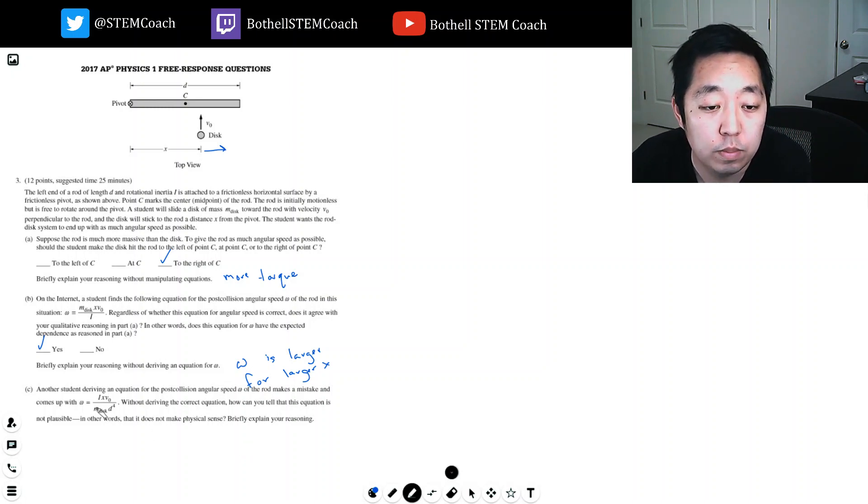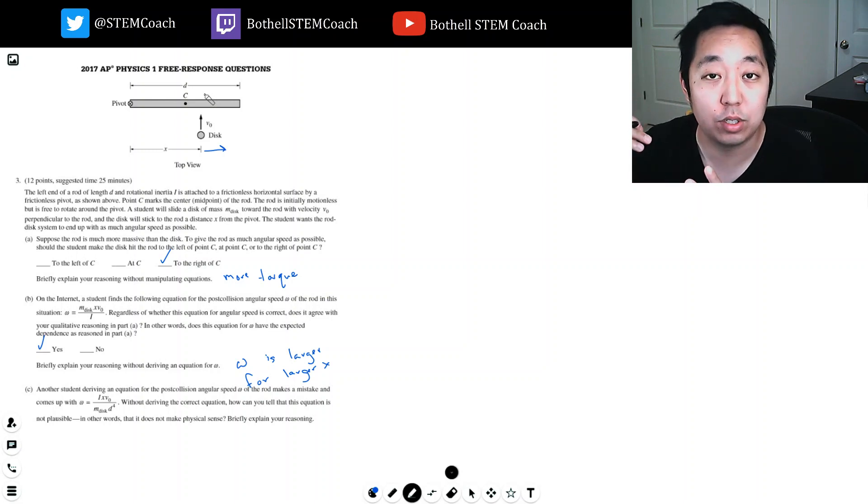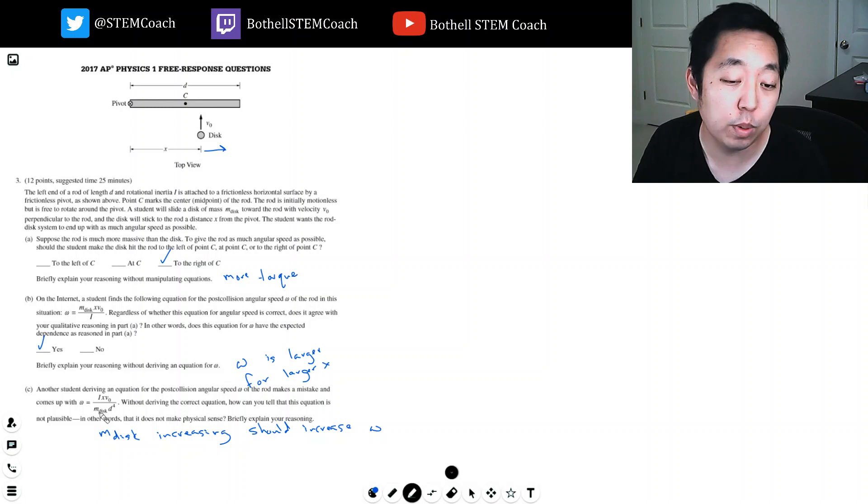There's probably a couple ways you can look at this. One thing I noticed is the mass of the disk is on the denominator. But the bigger the disk is, you would expect it to hit it harder and make it spin faster, right? Like if I threw a bowling ball at the thing with the same speed, it should make it spin faster. So mdisk increasing should increase omega. But it doesn't because larger mdisk will decrease omega because it's on the denominator. That's probably enough of an explanation.